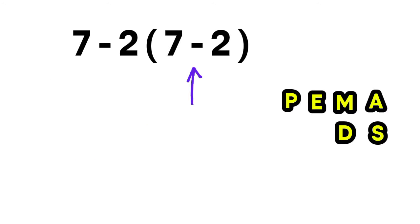In this expression, we have a parenthesis, a multiplication, and a subtraction. Inside the parenthesis, there is a subtraction. And this part here represents multiplication because whenever a number is written right beside a parenthesis, it automatically means multiplication, even if the sign is not shown.